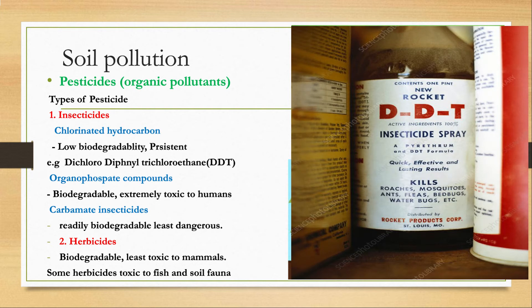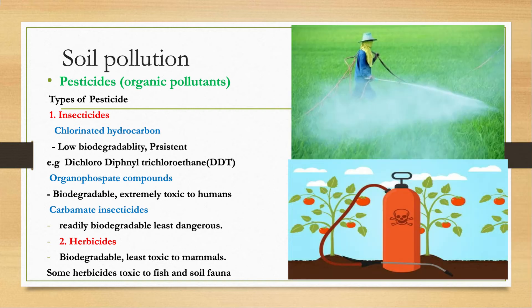DDT is very dangerous and has been banned in many countries due to its low biodegradability. The second group of insecticides is organophosphates, which are biodegradable — decomposed by microorganisms — but toxic to humans. The third group is carbamates, which are readily biodegradable and least dangerous.